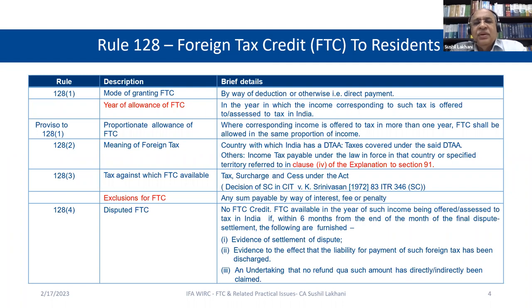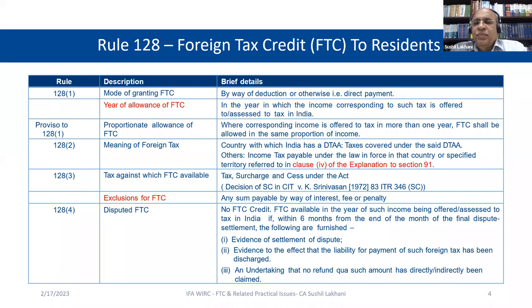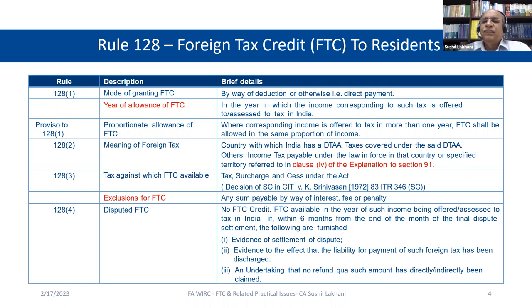FTC cannot be credited against interest, fee, or penalty. Regarding disputed foreign tax credit: if you have a foreign tax credit but have taken it to appeal in that foreign country, you will not get credit here until the dispute is finally settled. Credit is given in the year the income is offered to tax, provided within six months from the end of the month of final dispute settlement you furnish: evidence of settlement, evidence that tax liability has been discharged, and an undertaking that no refund has been claimed in that country.